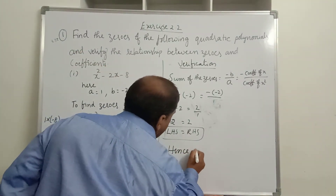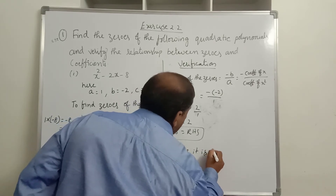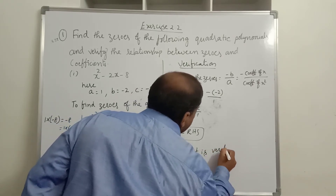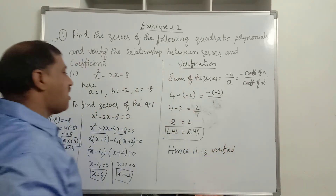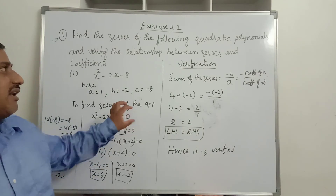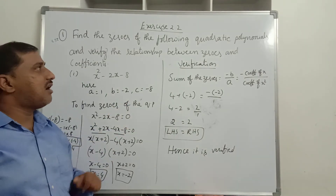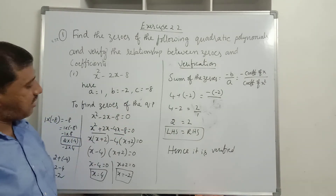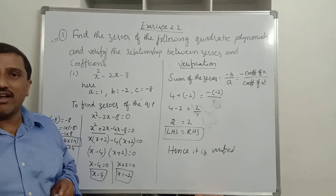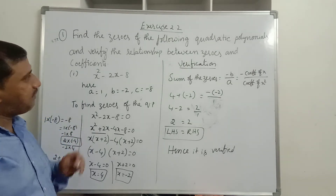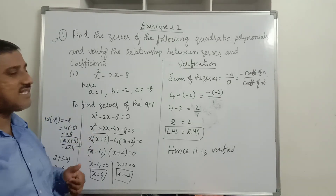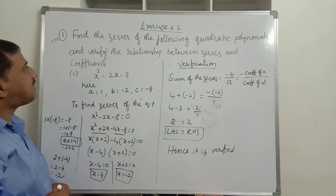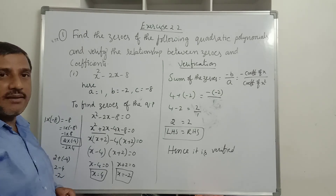Hence it is verified. Like this we find the zeros of the quadratic polynomial and verify the relationship between zeros and coefficients. Did you understand children? This is one of the important and easiest concepts.